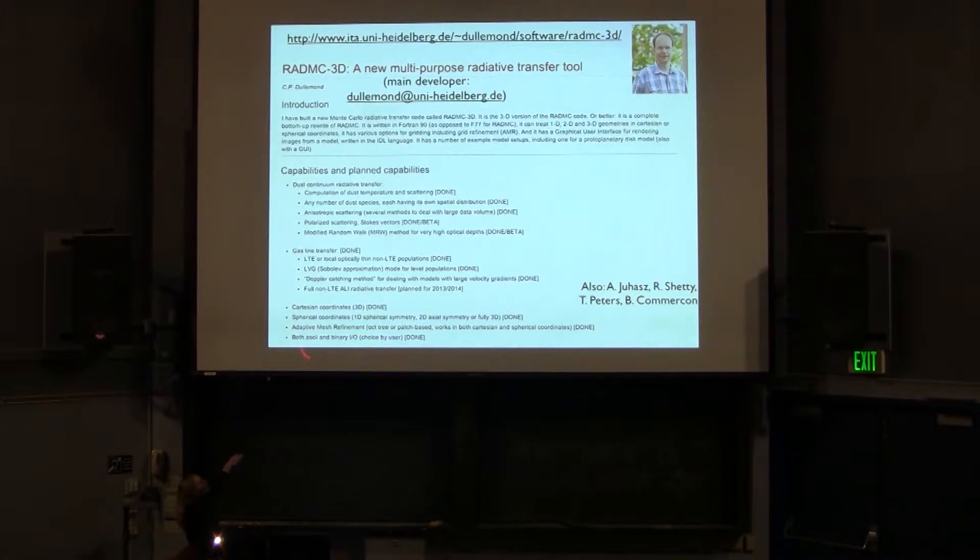So there's actually a huge number of capabilities that this code does. And in fact, it doesn't just do gas line transfer, which is what we're going to be talking about today. It actually does dust continuum, which is what I'm going to be talking about tomorrow. And it also has a huge number of capabilities in various states of being finished and well-tested, some in beta values, and some that are in the process of being developed.